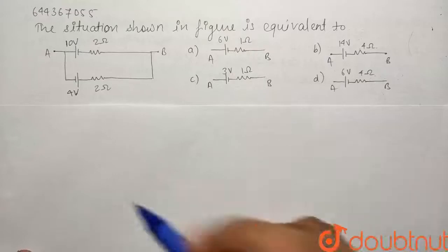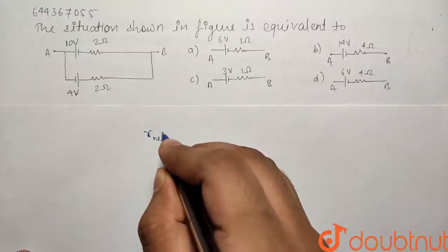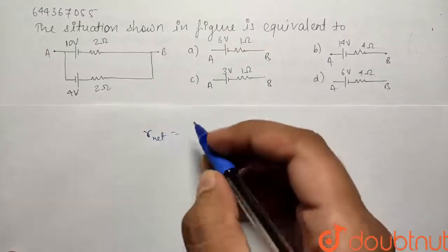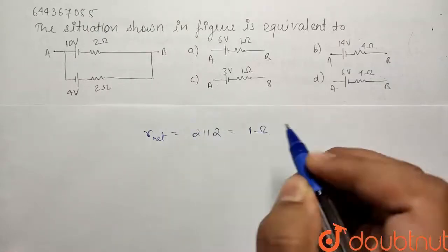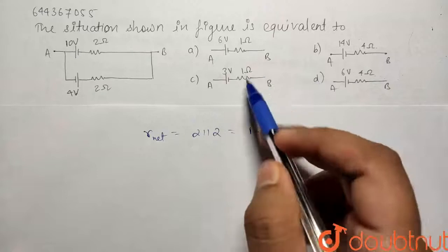So the resistance is easy to find out. We know that the net resistance will be nothing but the parallel connection of 2 and 2 ohms. So 2 and 2 in parallel will give 1 ohm. So our resistance will come out to be 1 ohm.